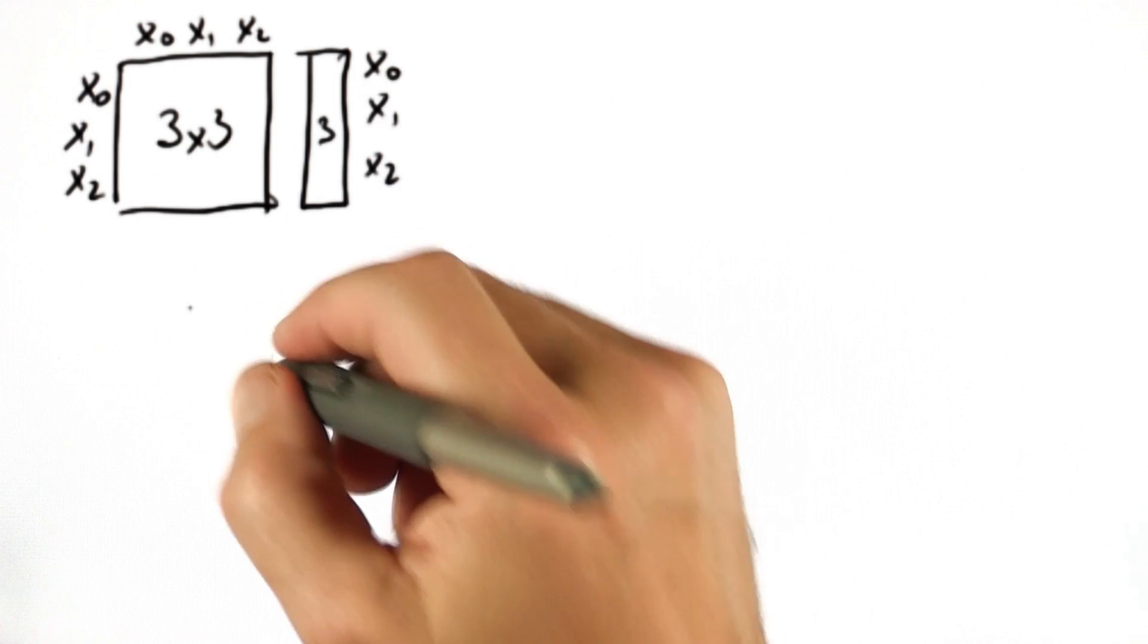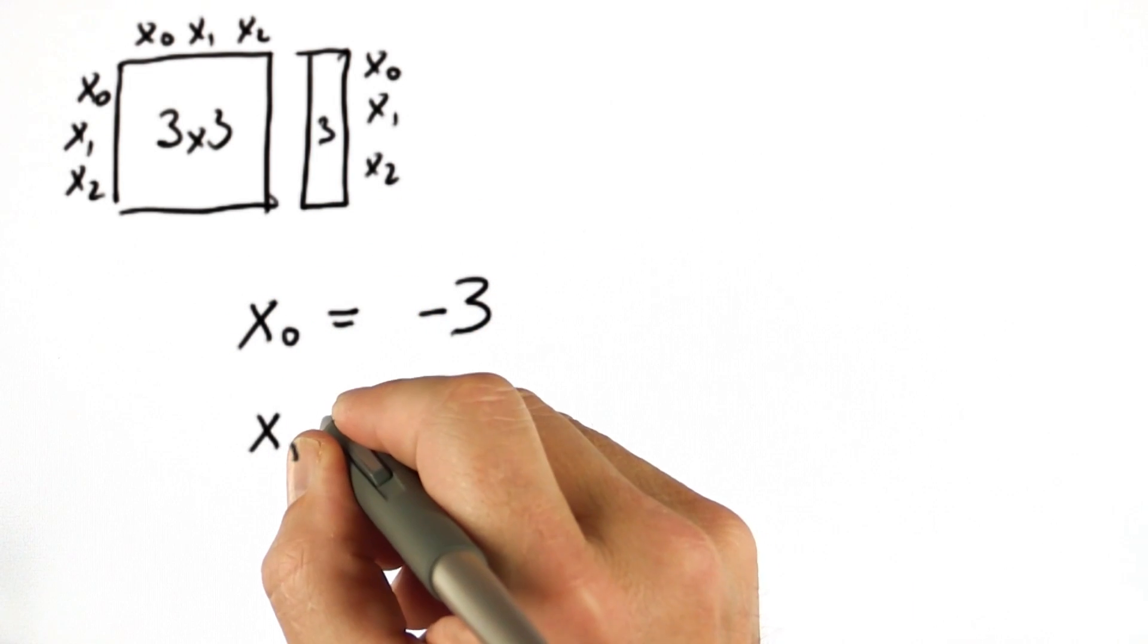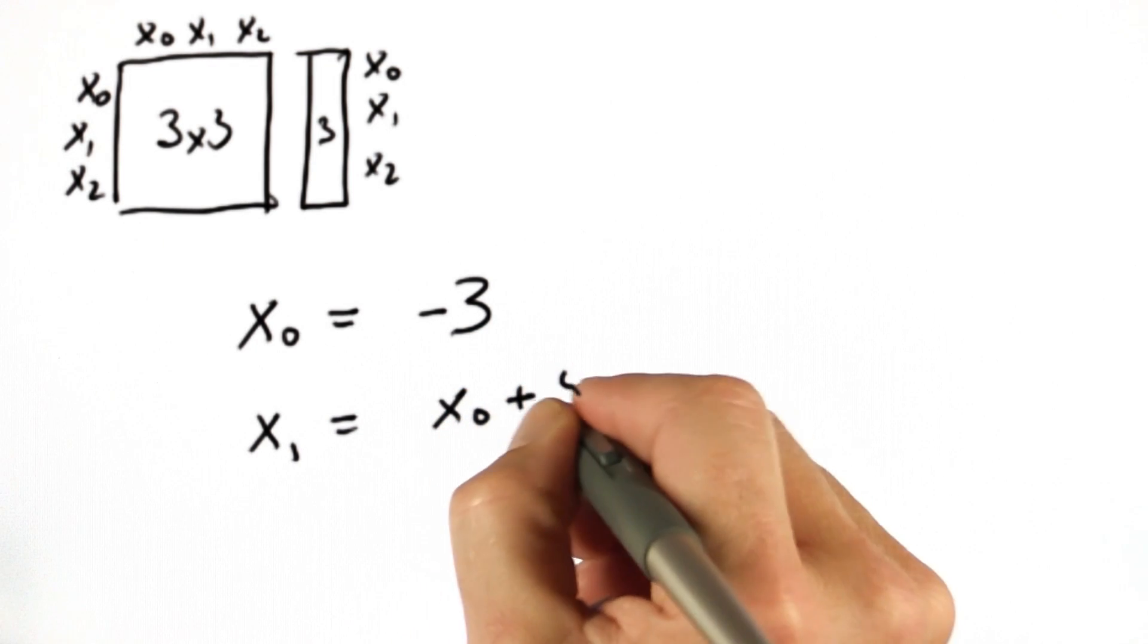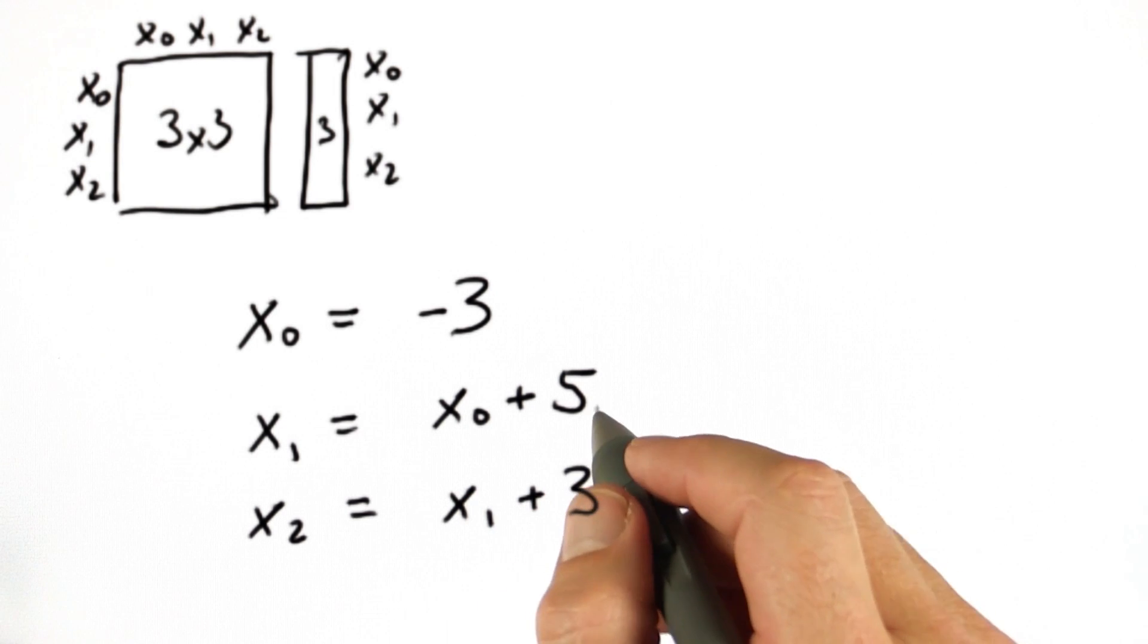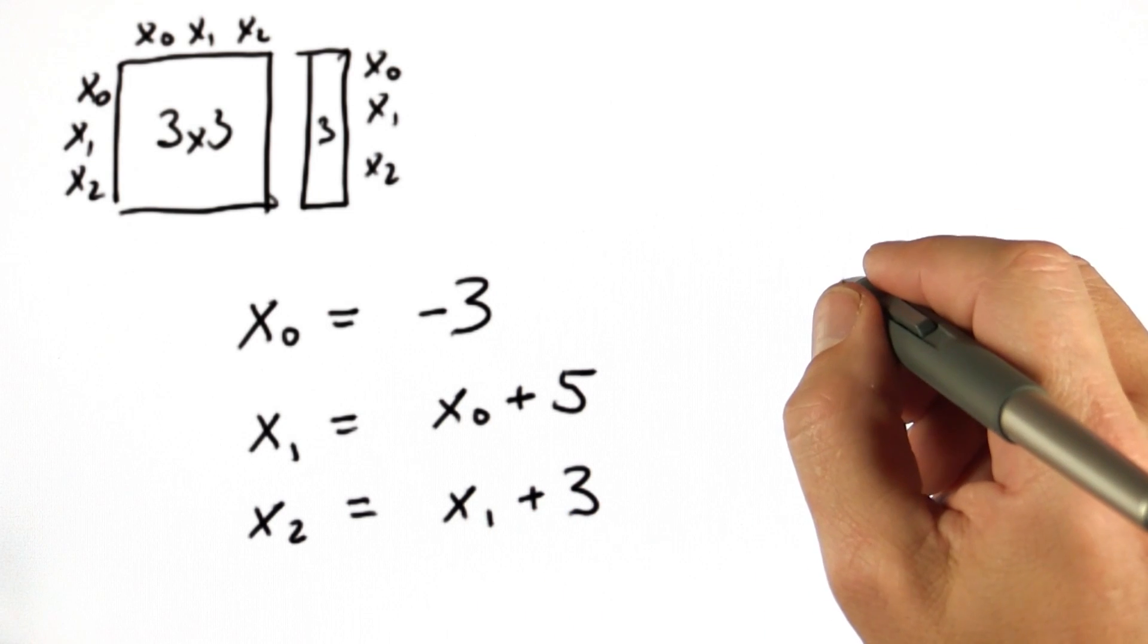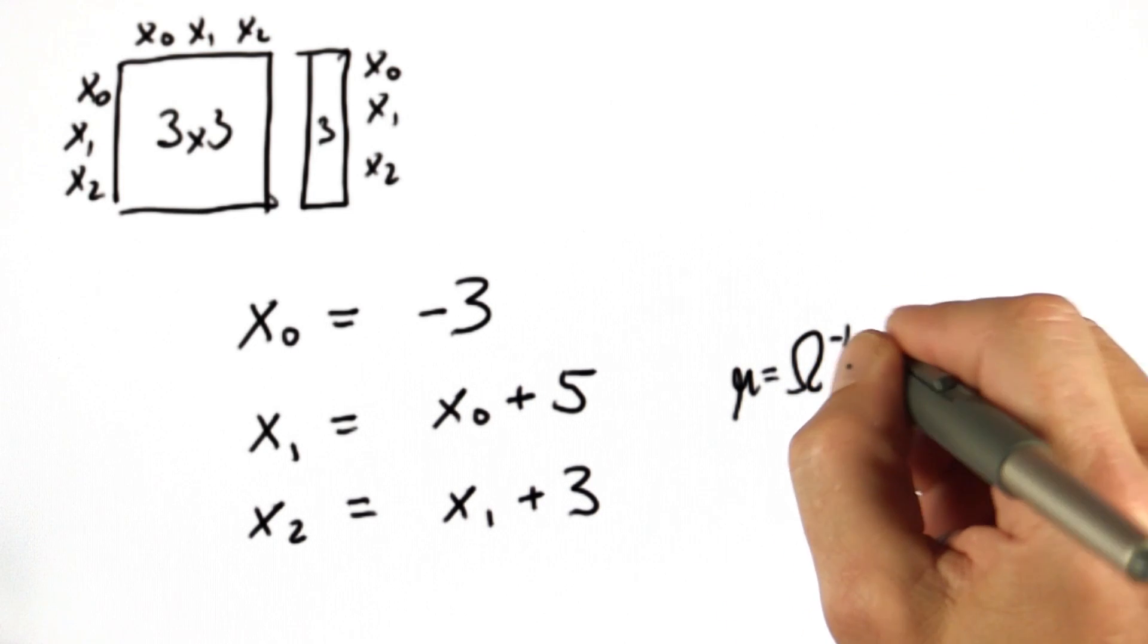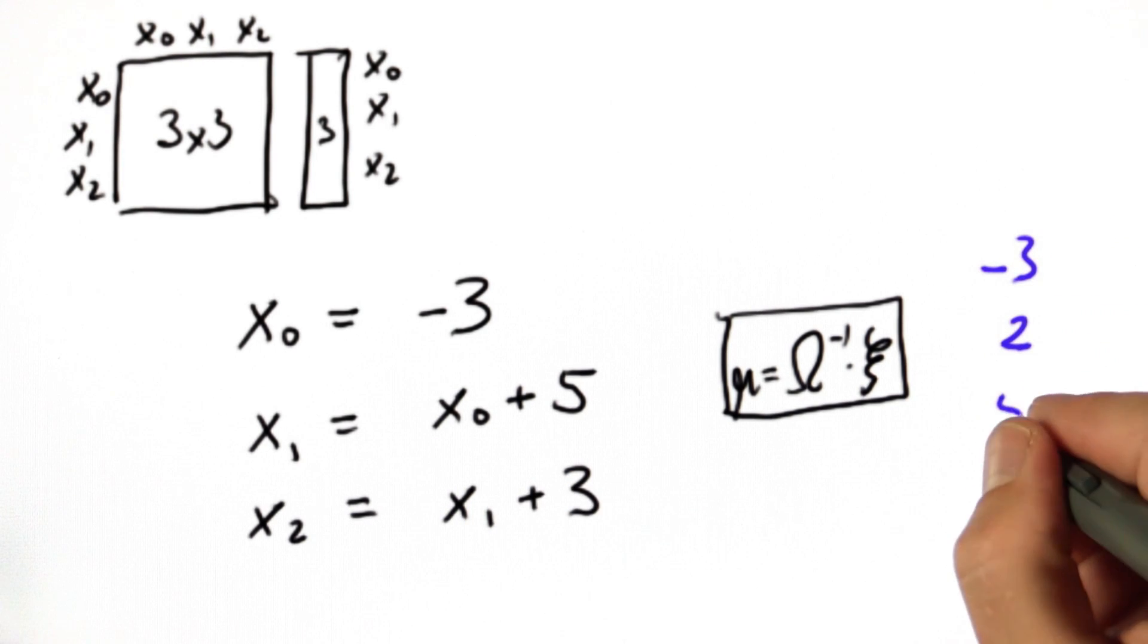By which you shall state that our initial location is minus 3, x1 in expectation is obtained by adding 5 to x0, and x2 is obtained by adding 3 to x1. So in expectation, what we should get out when we run the mu equals omega minus 1 times xi trick, is that x0 becomes minus 3, x1 becomes 2, and x2 becomes 5.